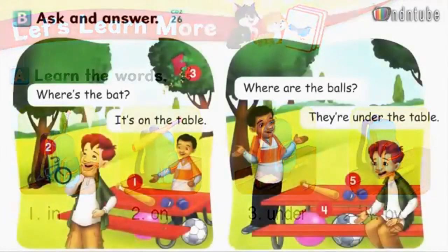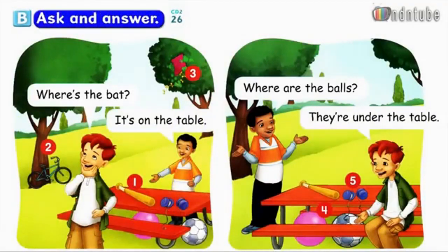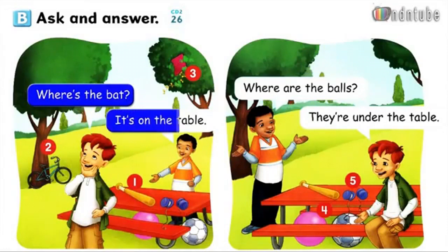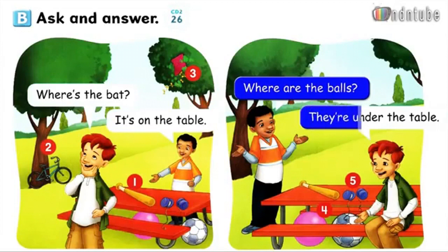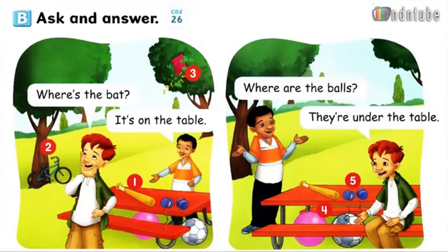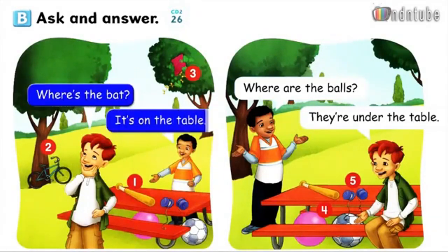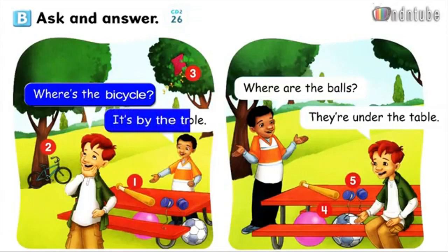Page 52. B. Ask and answer. Where's the bat? It's on the table. Where are the balls? They're under the table. Number 1: Where's the bat? It's on the table. Number 2: Where's the bicycle? It's by the tree.